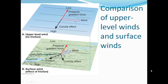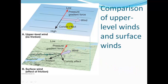Looking at upper-level winds versus surface winds: the difference is that we have friction when we get close to the ground. At upper levels, the pressure gradient and Coriolis effect are 180 degrees opposite and the wind moves at 90 degrees. But add friction near the surface, and the angle of the wind direction will be a little different than high above.